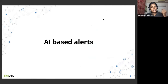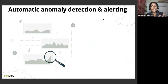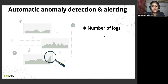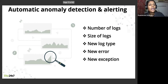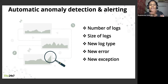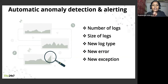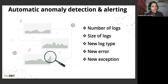Moving on to AI-based alerting: automatically detecting any deviation and alerting is possible using tools, including those that come with Elasticsearch or other third-party tools. Without manual configuration, automatic anomaly detection can alert you when the number of logs spikes suddenly, when there's a size difference, when a new log type appears, or when a new error or exception occurs. These are all anomalies from normal day-to-day logging. Any such anomalous behavior must be detected and alerted so it can be fixed before impacting your entire infrastructure or business.